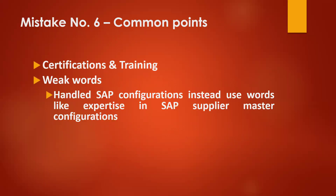Mistake seven: Weak words. Avoid phrases like: handled SAP configurations, handled SAP support project, handled the SAP procurement process, or knowledge in SAP configurations, knowledge in SAP MM process — these are all weak points. Instead use strong words like: expertise in SAP supplier master configuration, expertise in SAP material requirement planning, expertise in creation of plant enterprise structure in SAP MM.